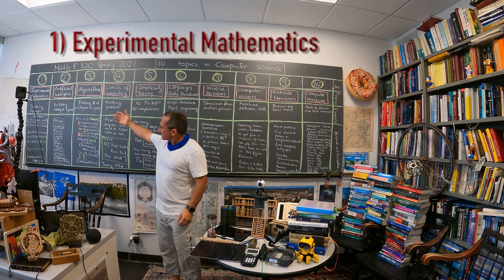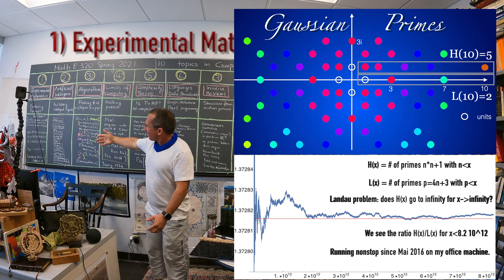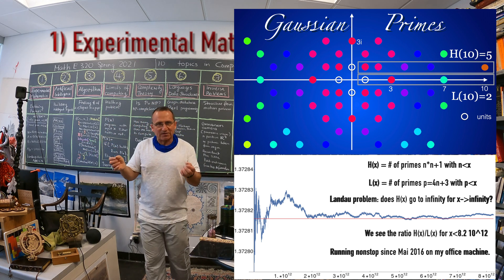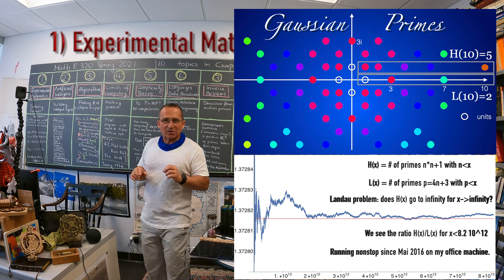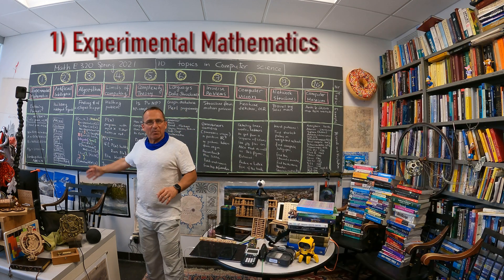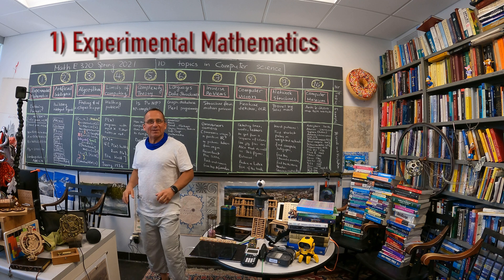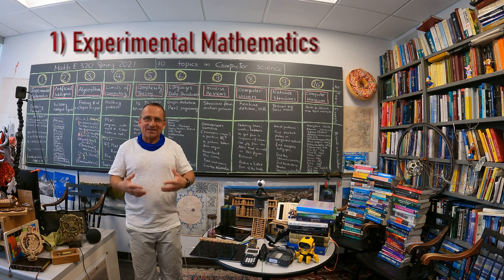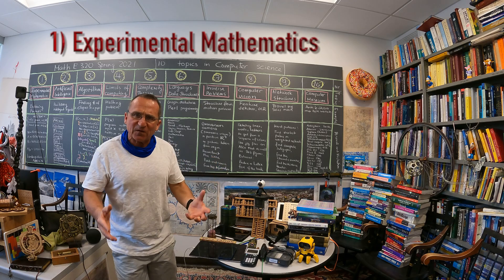It's very exciting to look at basic things. One of the things I'm actually running on this machine for five years is something about prime numbers. This is a question of Hardy and Littlewood, who wondered about the ratio between primes of the form n² + 1 and primes of the form 4n + 1. The ratio seems to converge to a number which Hardy and Littlewood already computed, but amazingly we don't even know whether there are infinitely many primes of the form n² + 1. The computer is your microscope, your telescope — you can look into the world of numbers or structures like graphs.